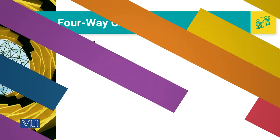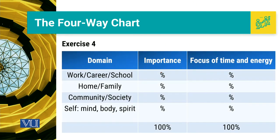When we talk about exercise number four, this is the table that we have to fill. Is table mein humari jo chaar basic domains hain — work, home, community and self — in ko hum apni life mein importance ki basis par out of hundred wo weight allocate karna chahte hain.